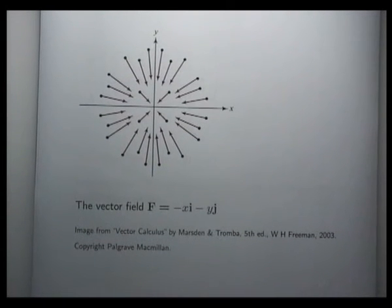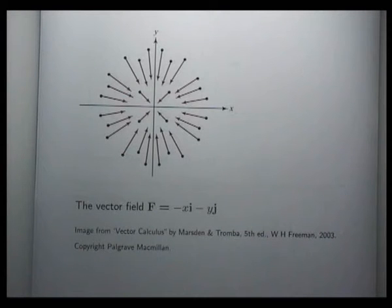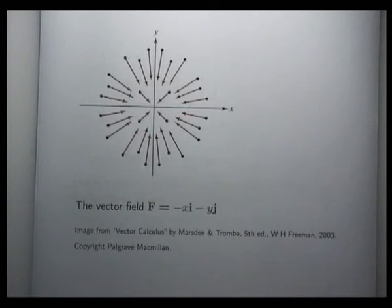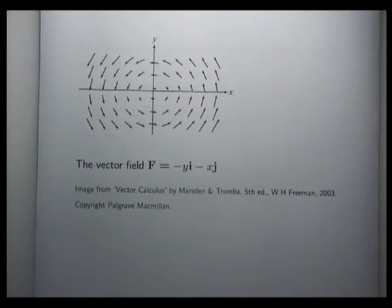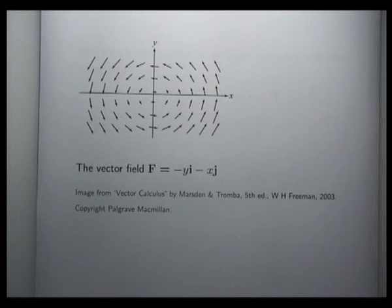Here is the situation of the first vector field with negative signs in it. Basically it's the same vector field but the direction of the arrows is reversed. Here is another simple vector field — again it looks like there's some sort of rotation going on around the origin.